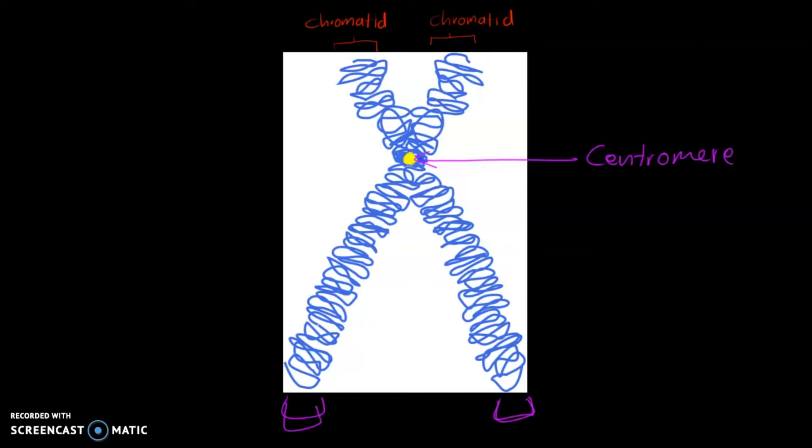So this ensures that each daughter cell will get exactly one copy of each chromosome. The other major function of the centromere is directing the formation of a special protein structure called kinetochore.